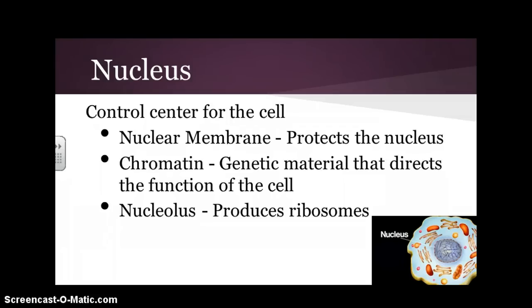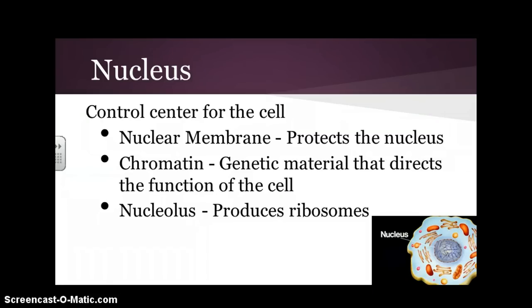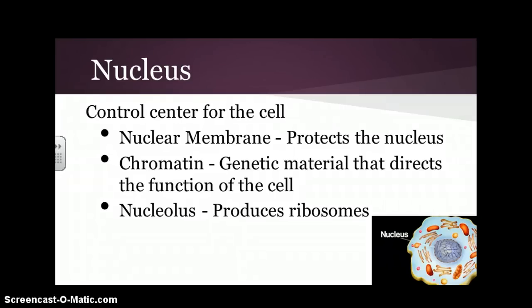One of the important components of a cell is the nucleus, which acts as the control center for the cell. It has a nuclear membrane that protects it, and there is chromatin inside of it — that's the genetic material that tells the cell what it's supposed to be doing. There's also a nucleolus, which produces ribosomes.